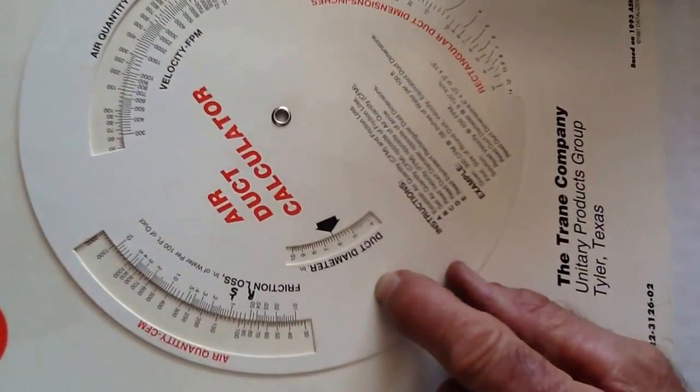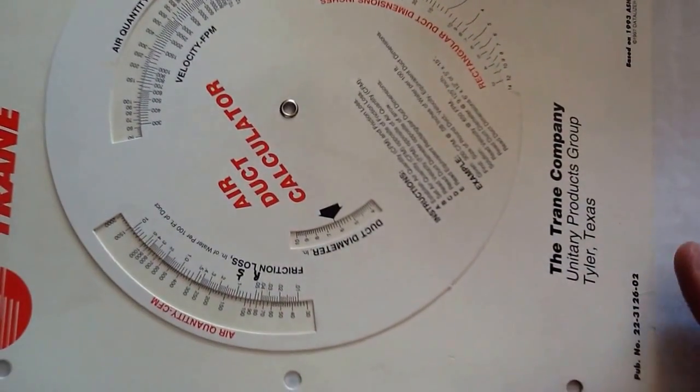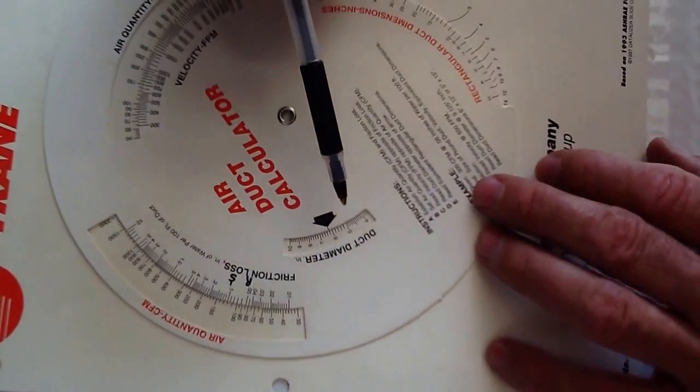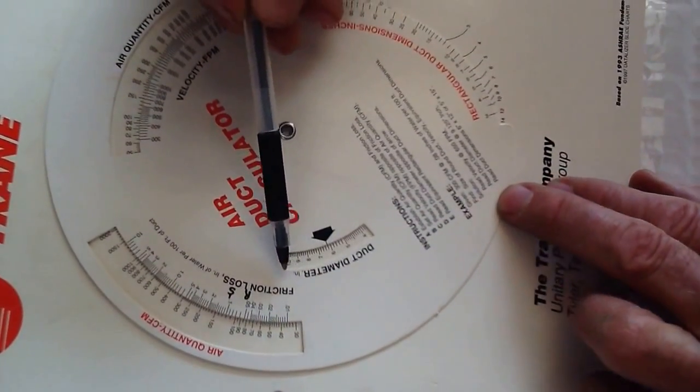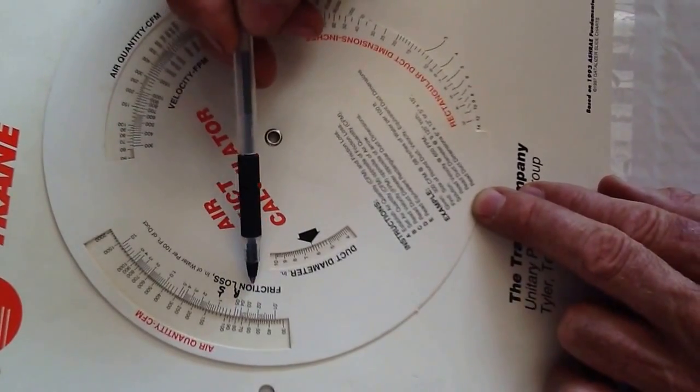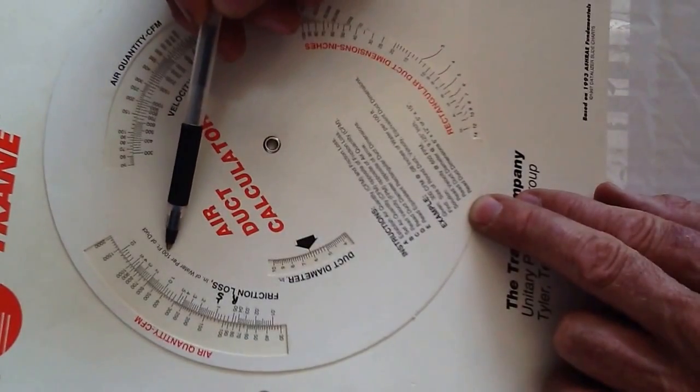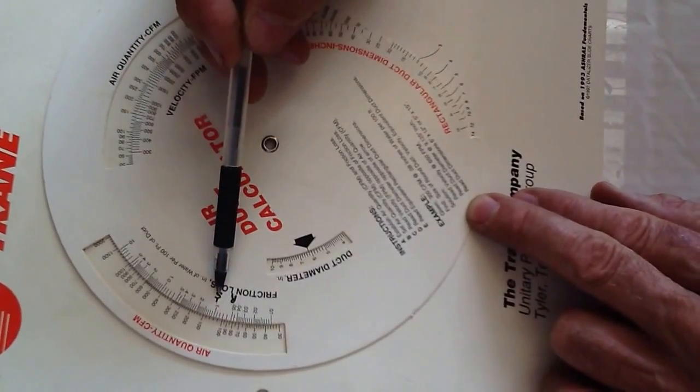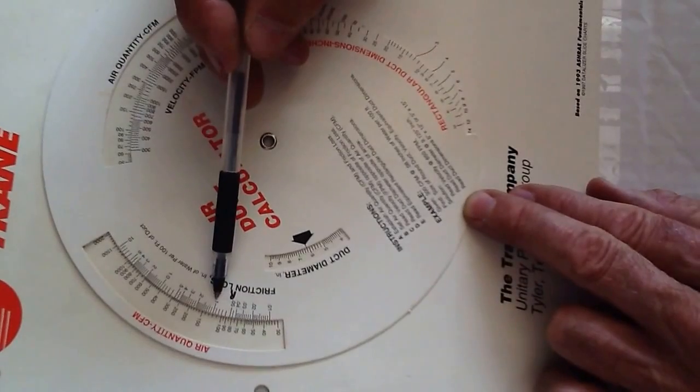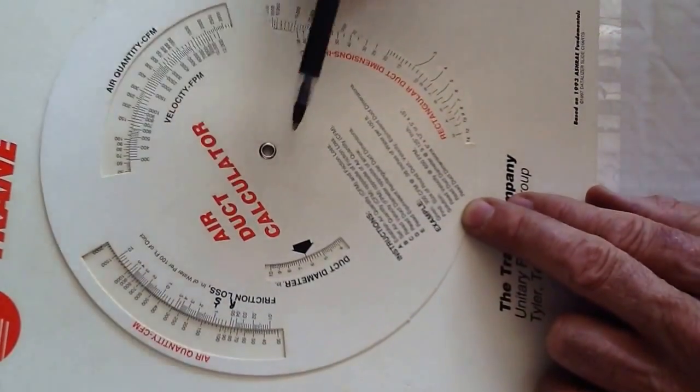Now let's talk about what we got here. We have duct diameter, you have supply - this is the friction loss chart per hundred feet of duct work. And you always do your supplies at 0.1 static pressure and return at 0.05.